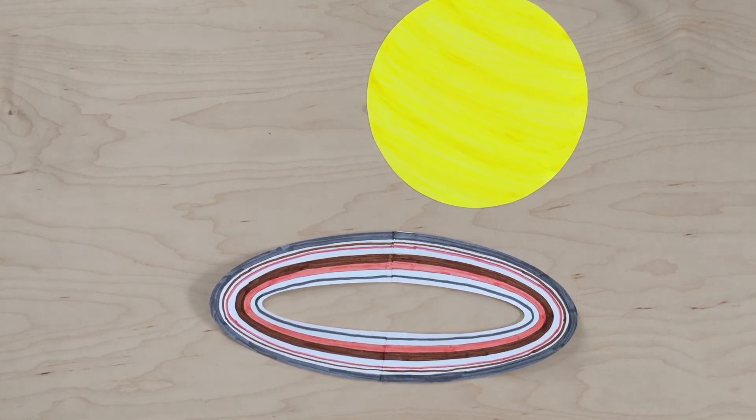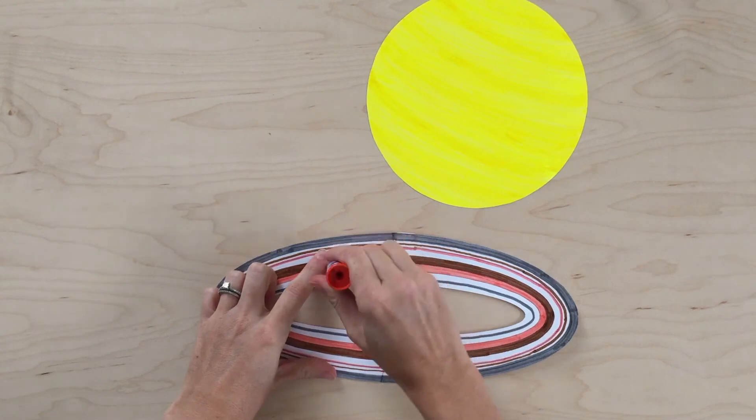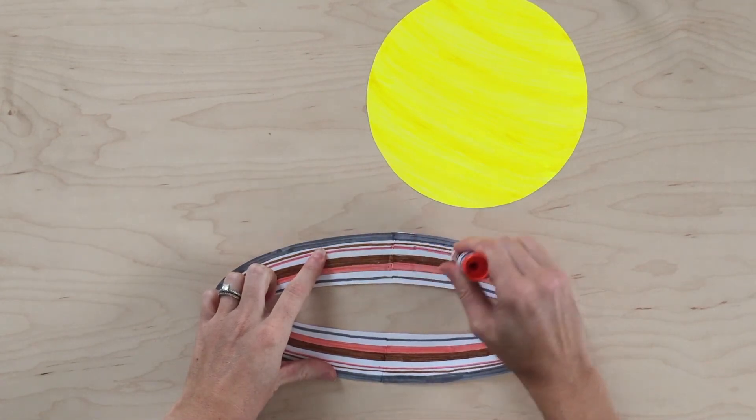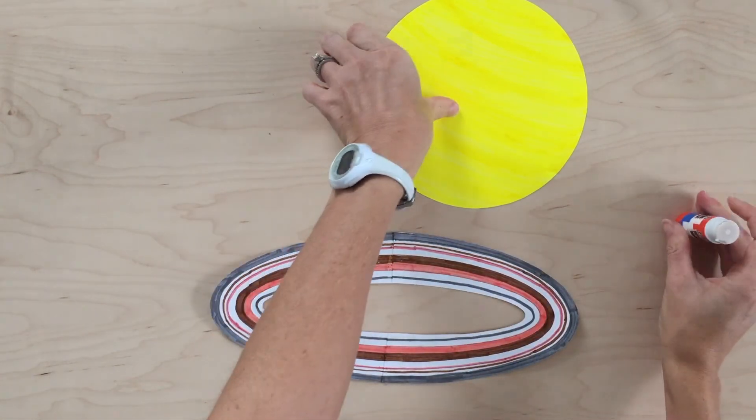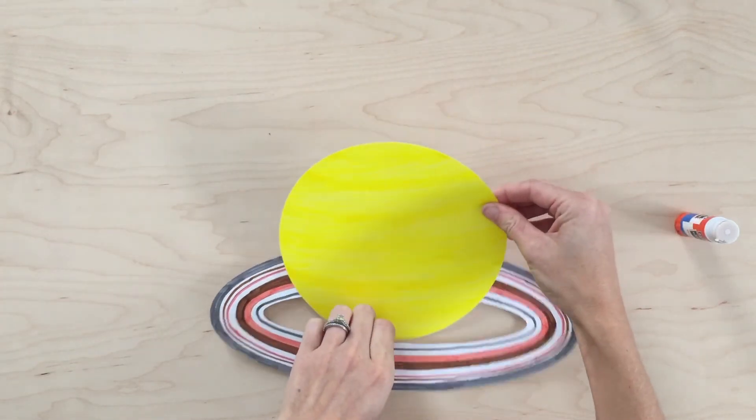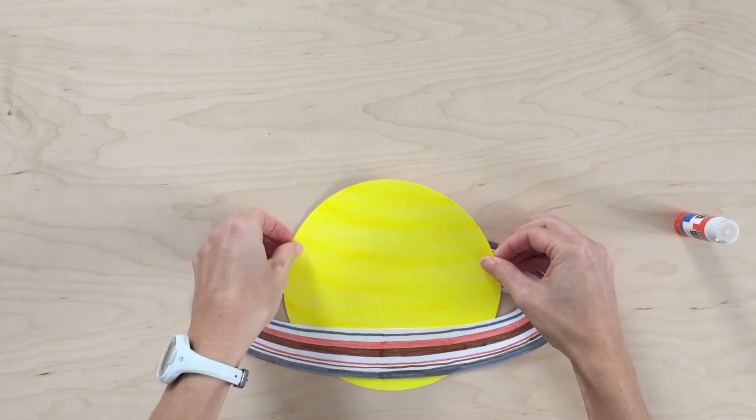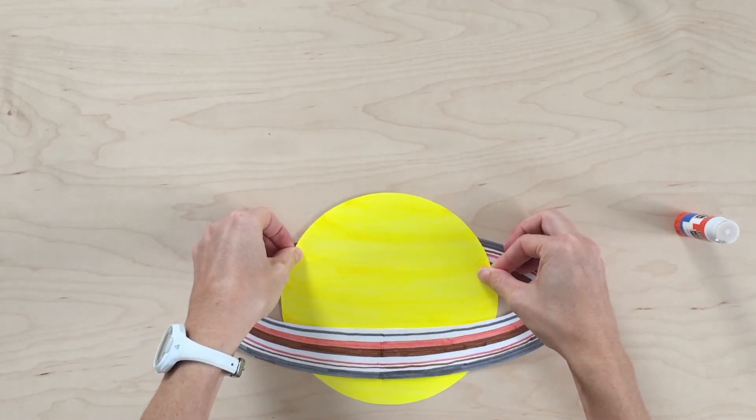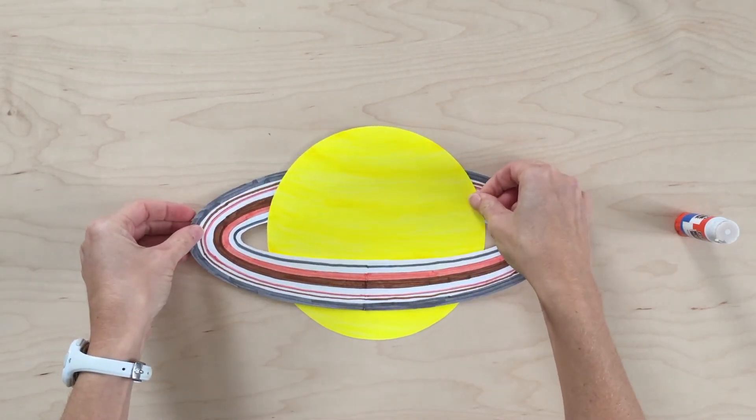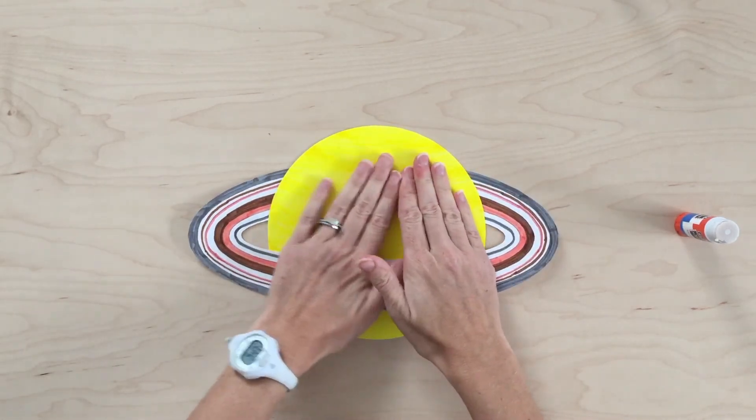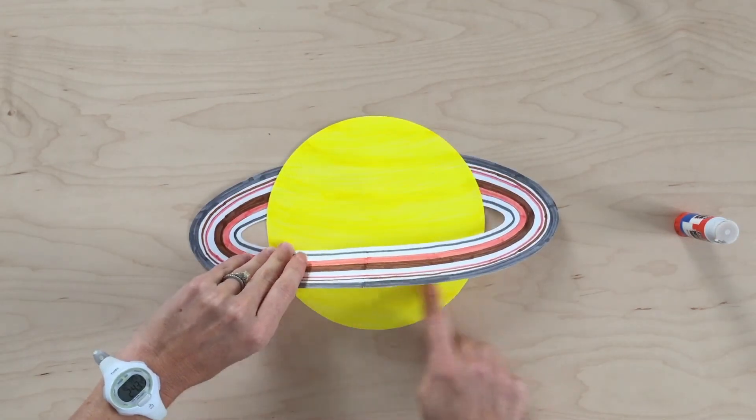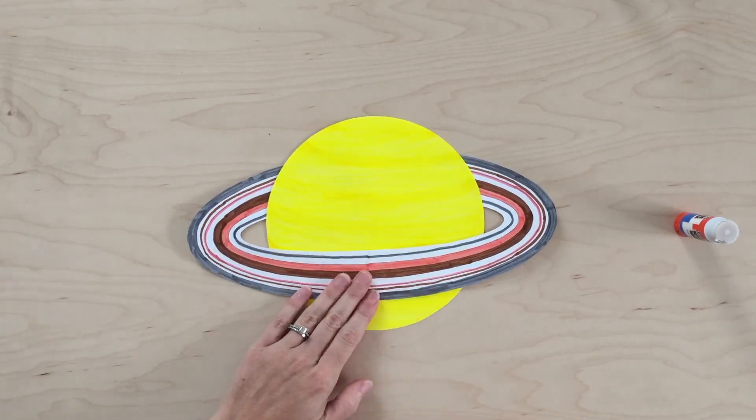When you're finished coloring Saturn's rings, decide which side you like the least and put some glue on it. Slide Saturn inside, so you have it where you want it. Press down and then you can add some more glue under here as well.